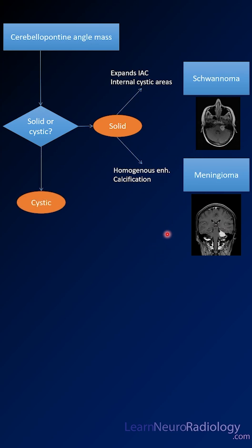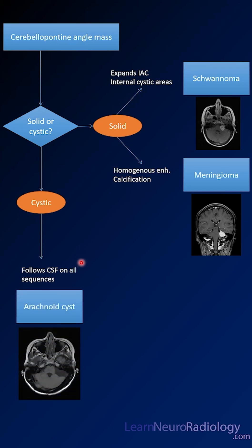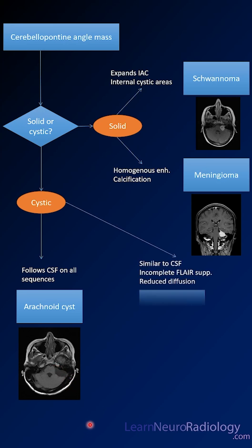If you're dealing with the more cystic masses, and it follows CSF on all sequences, you're probably dealing with an arachnoid cyst. These don't enhance and have no abnormal diffusion.